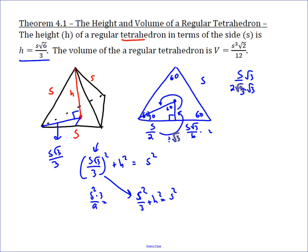Subtract side squared over 3, you get h squared equals 2 side squared over 3, because side squared is 3 side squared over 3. Take the square root of both sides, and you get h equals side root 2 over root 3.